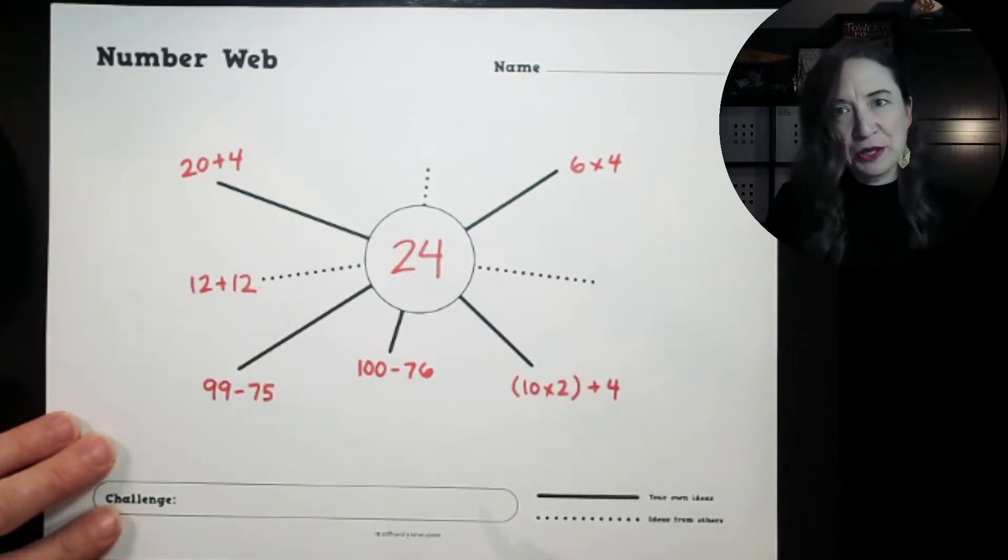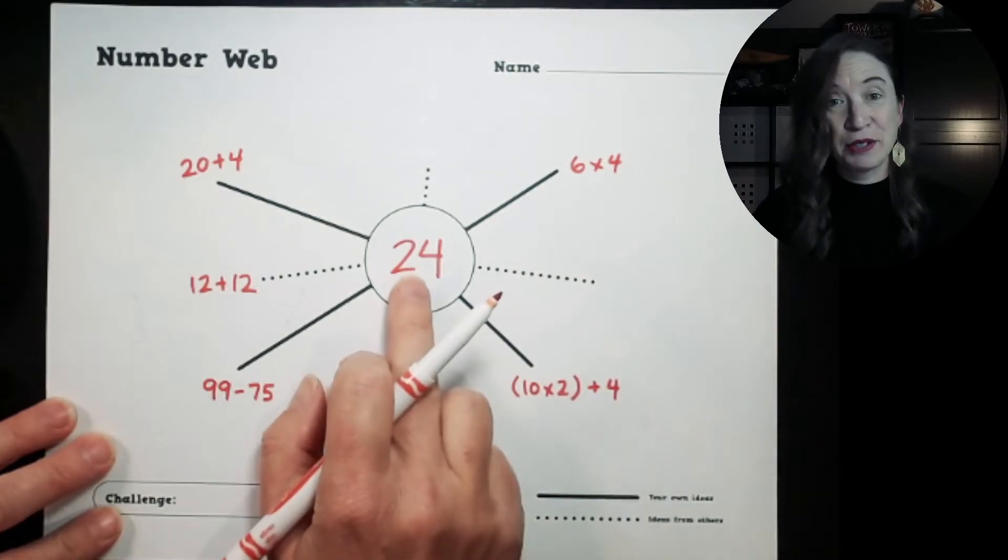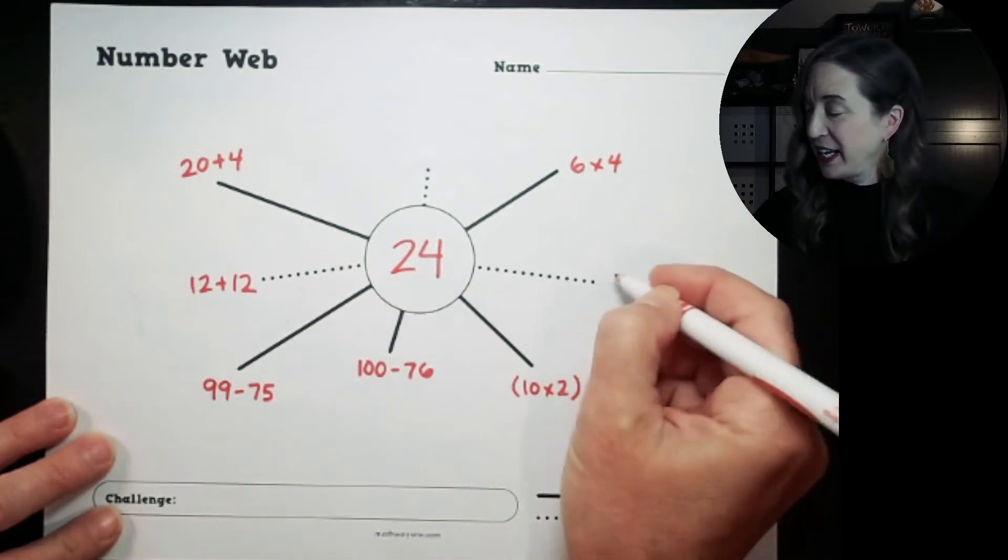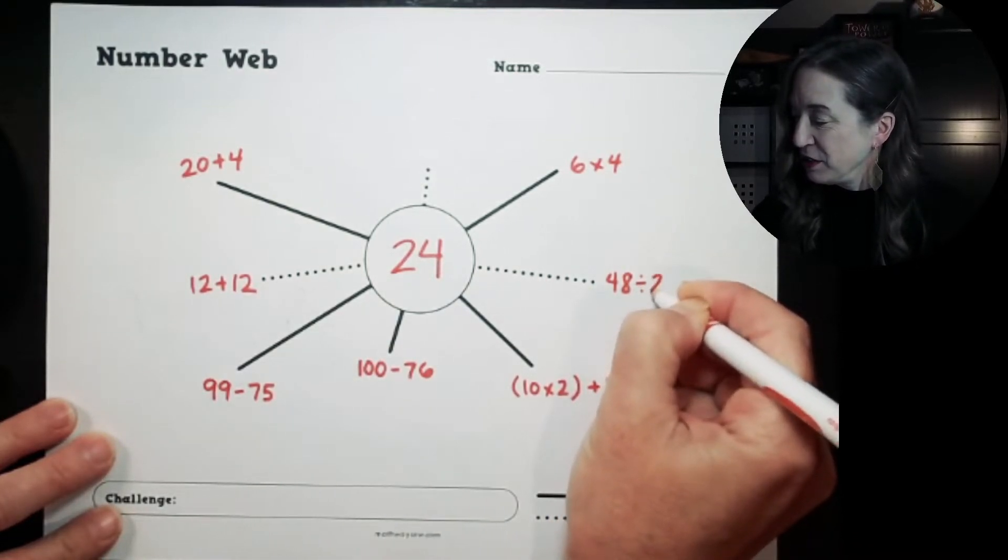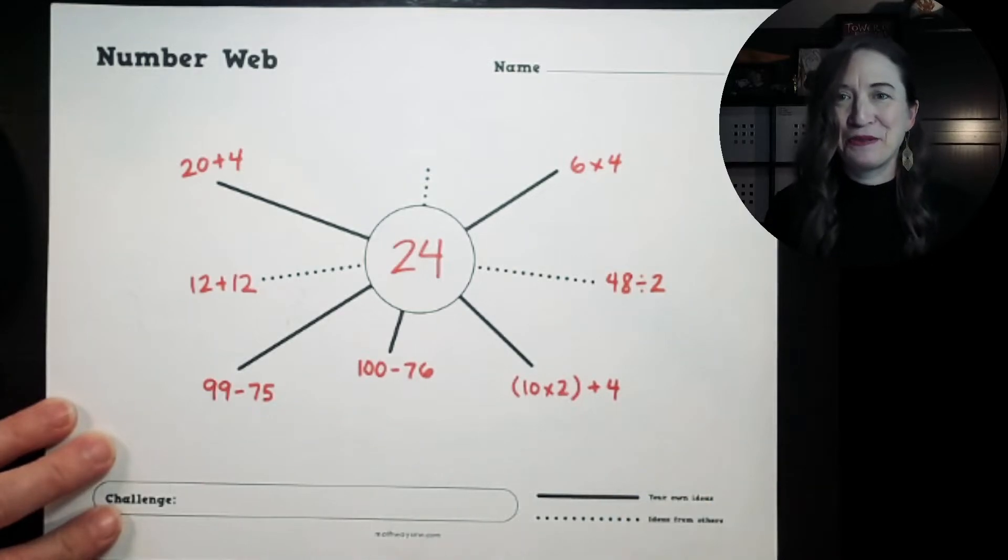And I might go to another friend, and you know what, I'm very impressed because this friend has decided to double 24 to 48 and then split it in two. 48 divided by 2 is 24.